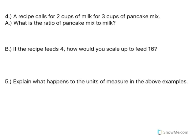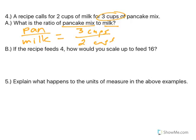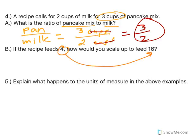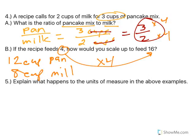Number four. A recipe calls for two cups of milk for three cups of pancake mix. What is the ratio of pancake mix to milk? Notice what comes first. Pancake mix to milk. That means pancakes on top, milk on the bottom. Well, pancake, three cups. Three cups over two cups of milk. Cups cancel out, and my ratio is 3 to 2. Now, that recipe, this is part B, that recipe feeds four. How would I scale it up to feed 16? Well, from four, how do you get to 16? Well, you multiply by four. So we would need to multiply each of these by four. So you would need 12 cups of pancake mix, and eight cups of milk. That's what that means.